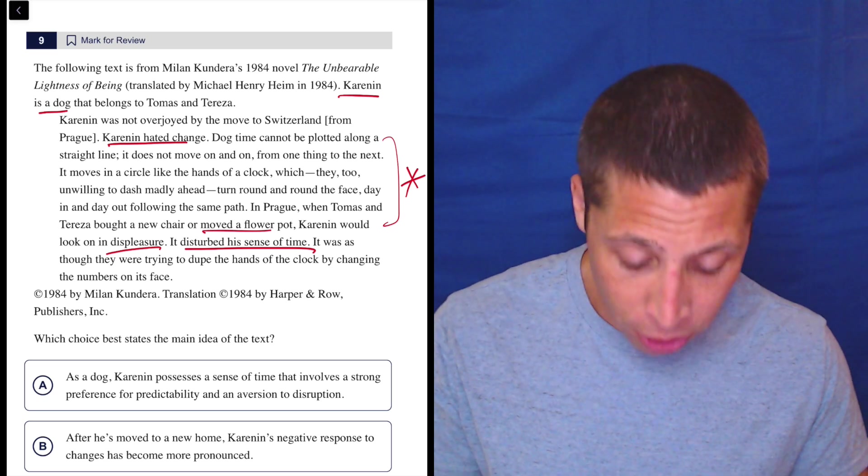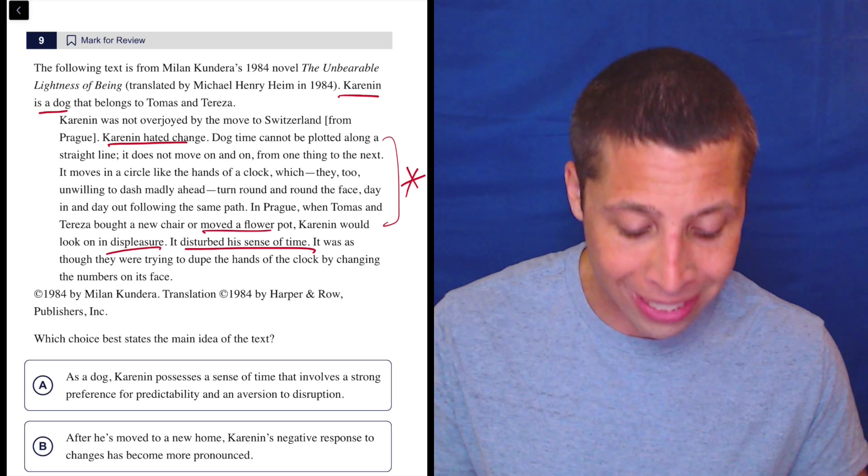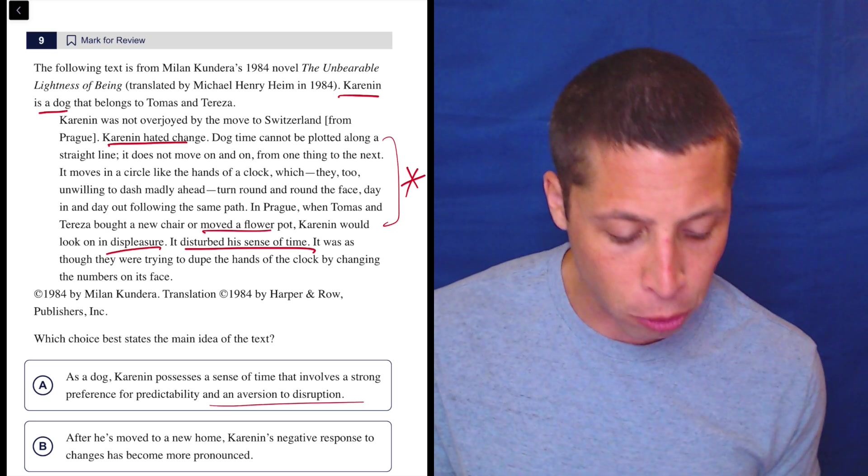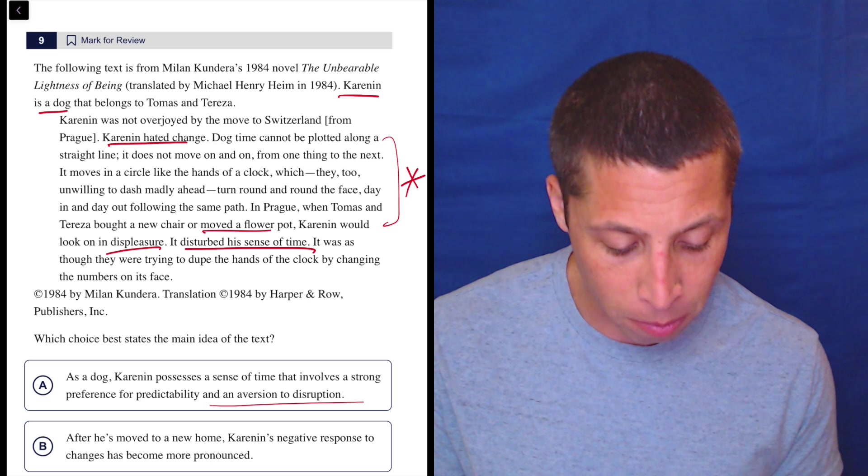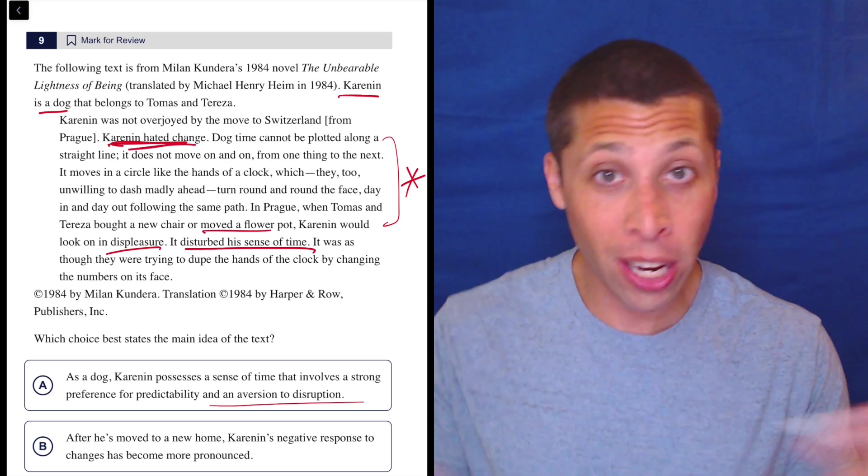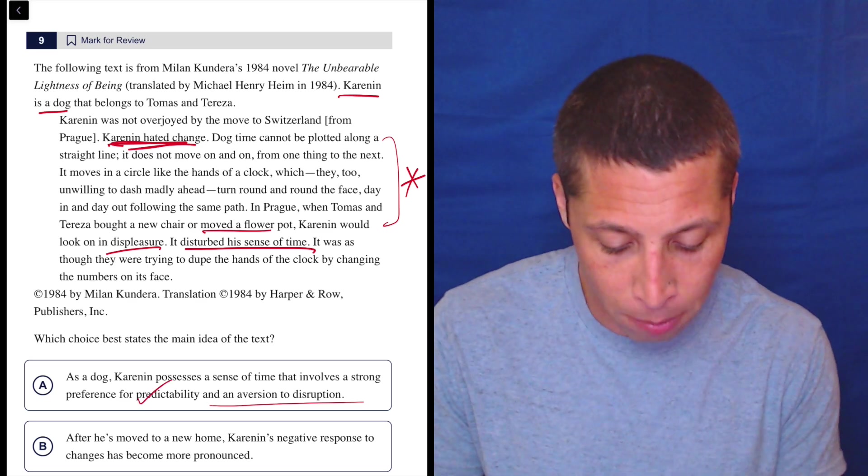So let's look at A. As a dog, Karenin possesses a sense of time that involves a strong preference for predictability and an aversion to disruption. So many of you are going to be confused by the end because you don't know what aversion means. But preference for predictability? Karenin hated change. Hate change means love predictability. Those are clearly the same thing. So that seems good.